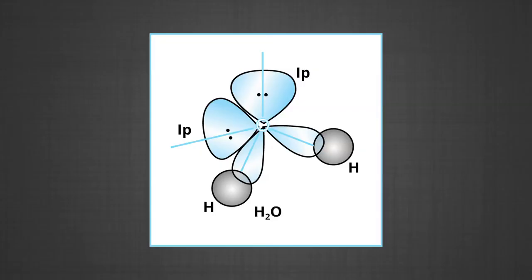In the case of the water molecule, the four oxygen orbitals — one 2S and three 2P — undergo SP3 hybridization, forming four SP3 hybrid orbitals, out of which two contain one electron each and the other two contain a lone pair of electrons. These four SP3 hybrid orbitals acquire a tetrahedral geometry with two corners occupied by hydrogen atoms and two by lone pairs. The bond angle is reduced to 104.5° from 109.5°, and the molecule acquires a V-shape or angular geometry.